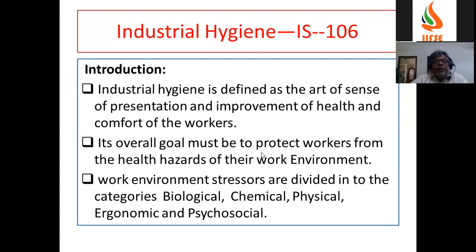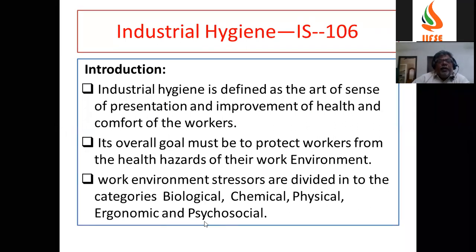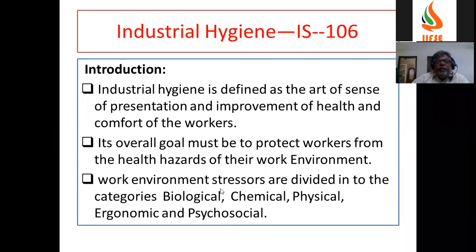What is the objective of industrial hygiene? The purpose is protecting the health hazards of the working environment. The work environment is divided into the categories of biological, chemical, physical, ergonomical, and psychological hazards.